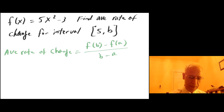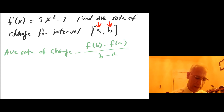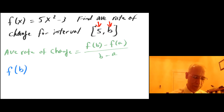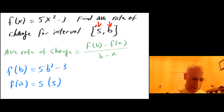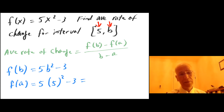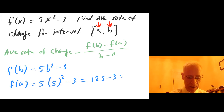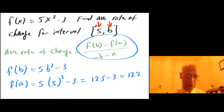Here, a is the first value and b is the second value. So f of b equals 5 times b squared minus 3. And f of a — since a equals 5 — equals 5 times 5 squared, which is 5 times 25, giving 125, minus 3, which equals 122.